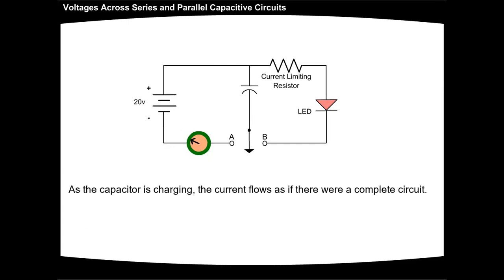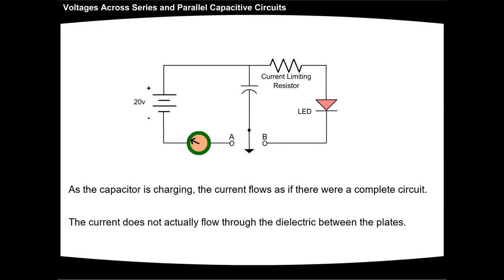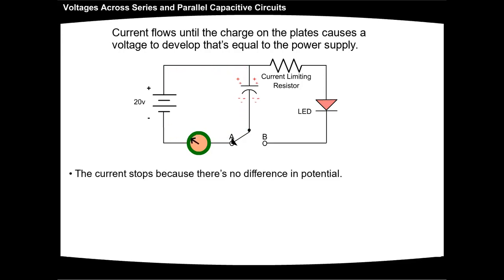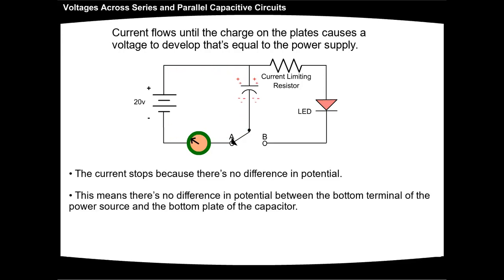As the capacitor is charging, the current flows as if there were a complete circuit. The current does not actually flow through the dielectric between the plates. Current flows until the charge on the plates causes a voltage to develop that's equal to the power supply. The current stops because there's no difference in potential between the bottom terminal of the power source and the bottom plate of the capacitor.